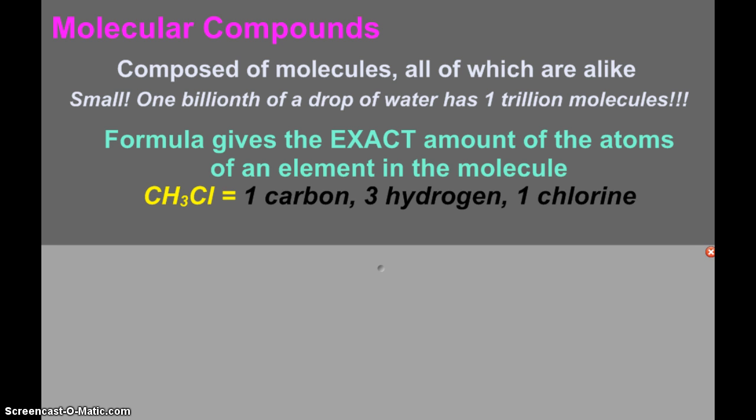First off, remember that molecular compounds are composed of molecules, all of which are alike. And we typically represent or talk about molecular compounds being made of non-metals only. Obviously molecules are extremely small. For example, one billionth of a drop of water has one trillion molecules, which takes us into Avogadro's number. But the key thing about a molecular compound is its formula gives you the exact amount of the atoms of an element in the compound, or in the molecule.